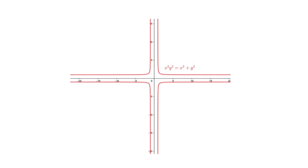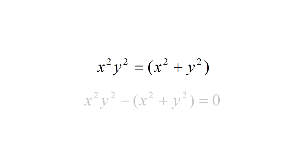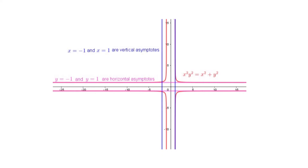As another example, find the vertical and horizontal asymptotes of x²y² = x² + y². Rewriting as x²y² − x² − y² = 0, the highest power of x is x² with coefficient y² − 1. Setting y² − 1 = 0 gives two horizontal asymptotes: y = −1 and y = 1. The highest power of y is y² with coefficient x² − 1. Setting x² − 1 = 0 gives two vertical asymptotes: x = −1 and x = 1.